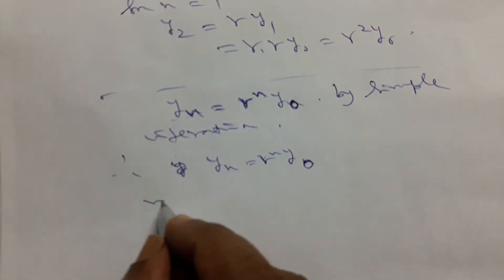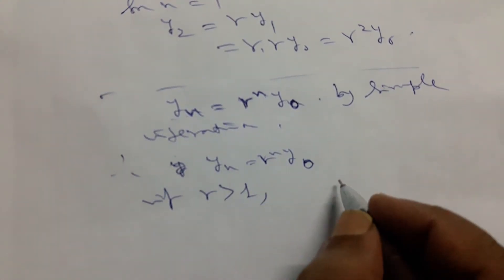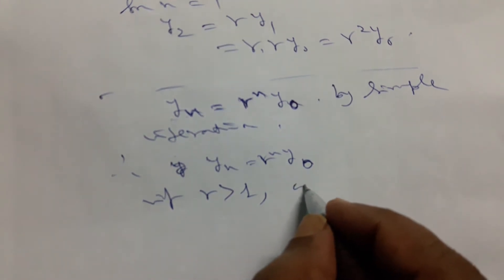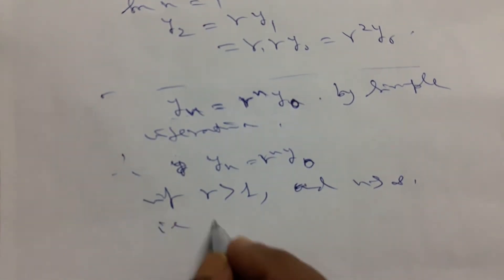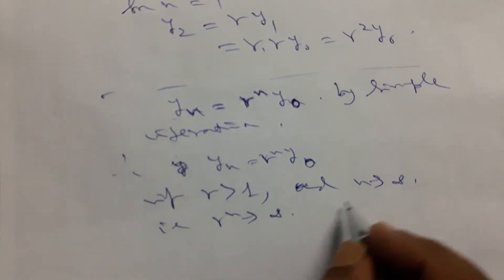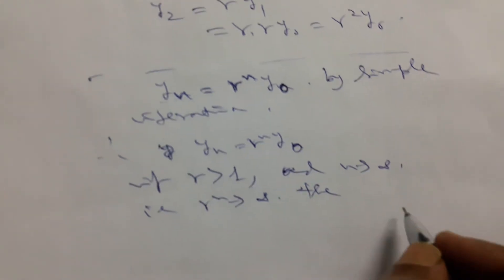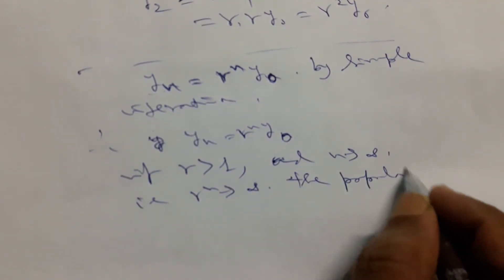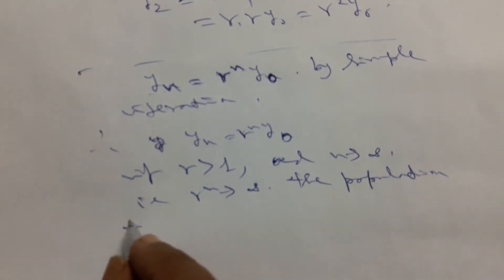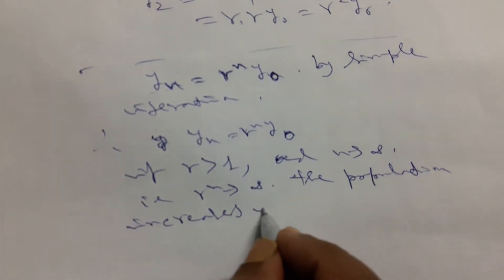Now, if r is greater than 1 and n tends to infinity, therefore r to the power n tends to infinity. Therefore the population increases infinitely.